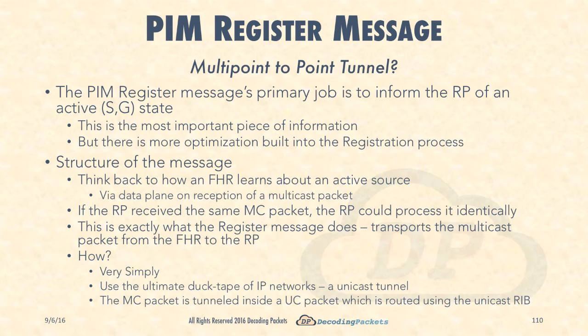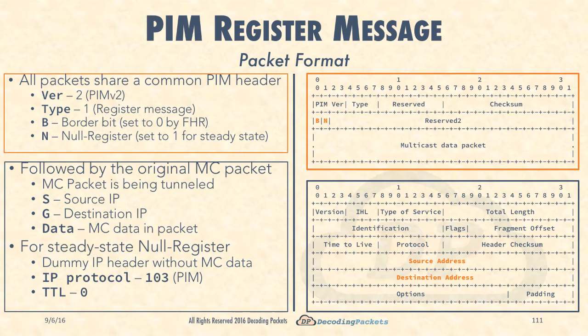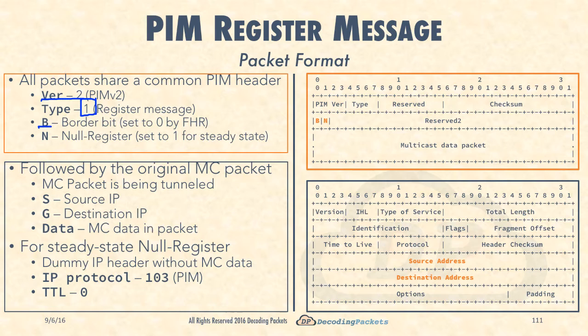Here's the actual packet format. All PIM register packets share a common header. There is a version number — almost always version 2. The type of this message is type 1, which identifies the packet as carrying a register message. There is also a border bit, but as long as the source is directly connected at layer 2 to the FHR, it is set to 0. By definition, an actual FHR will set this to 0.